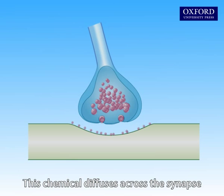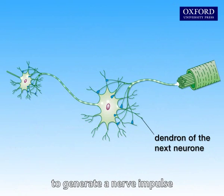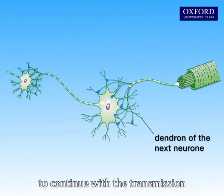This chemical diffuses across the synapse and stimulates the dendron of the next neuron to generate a nerve impulse to continue with the transmission.